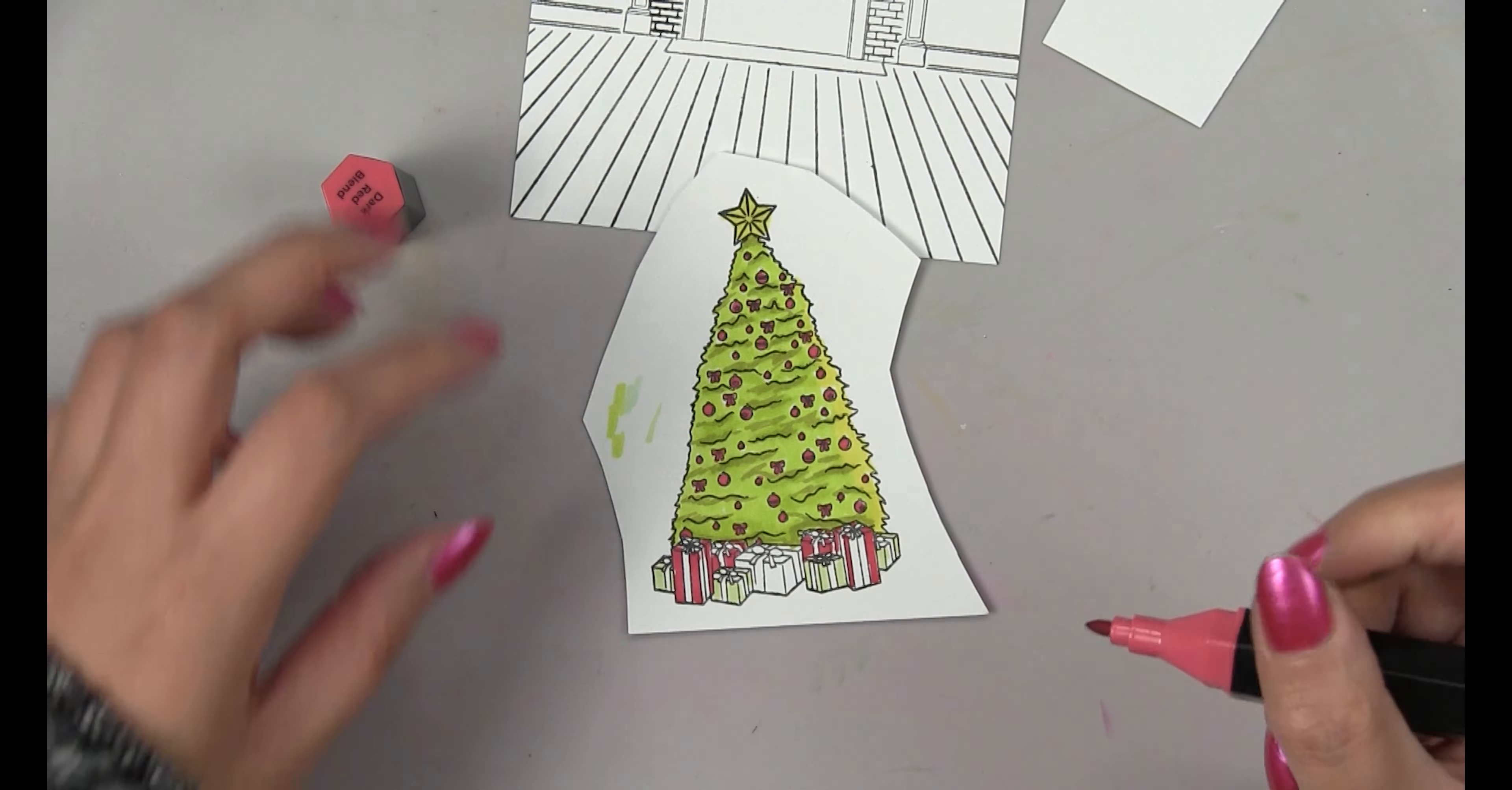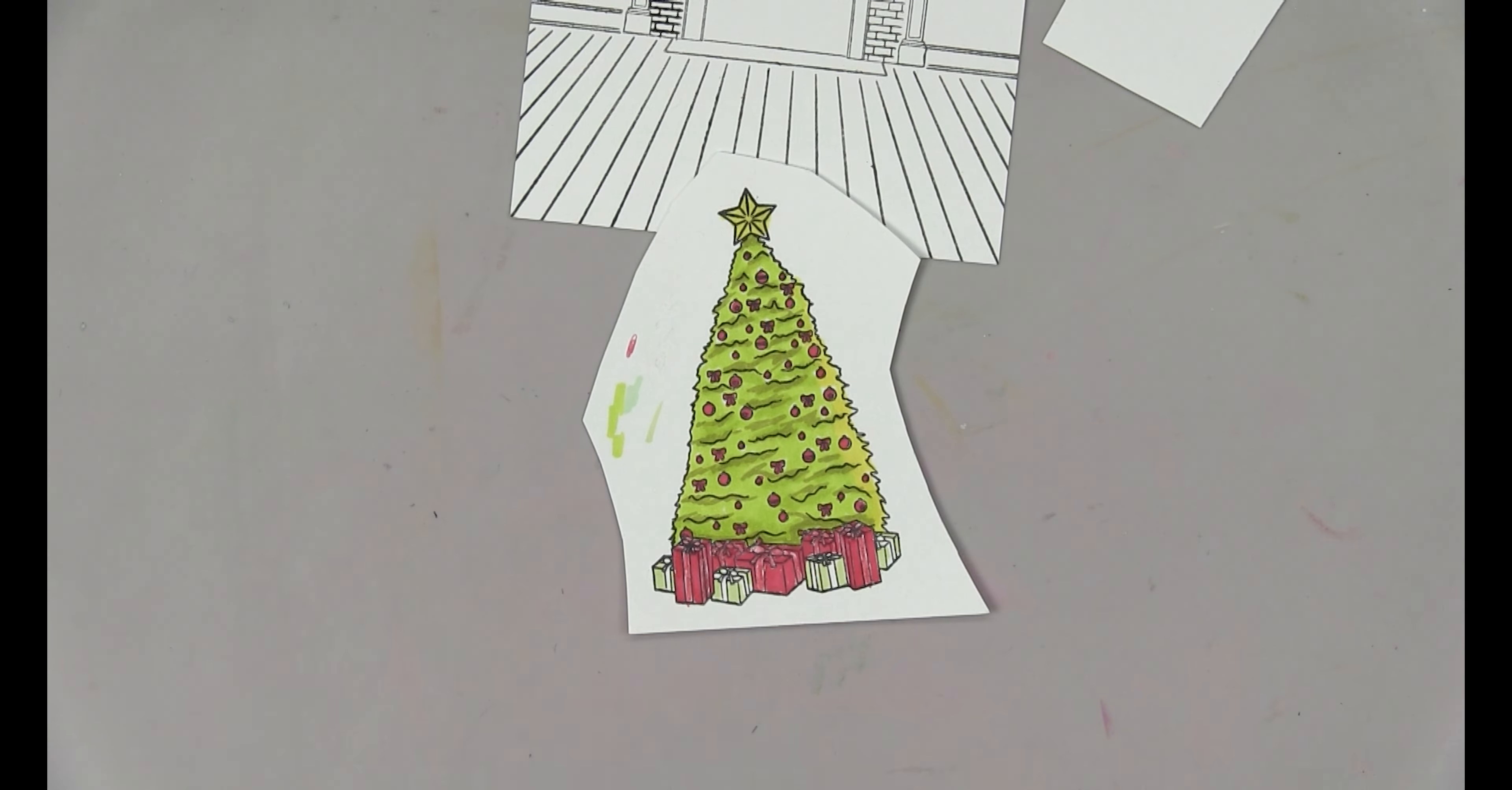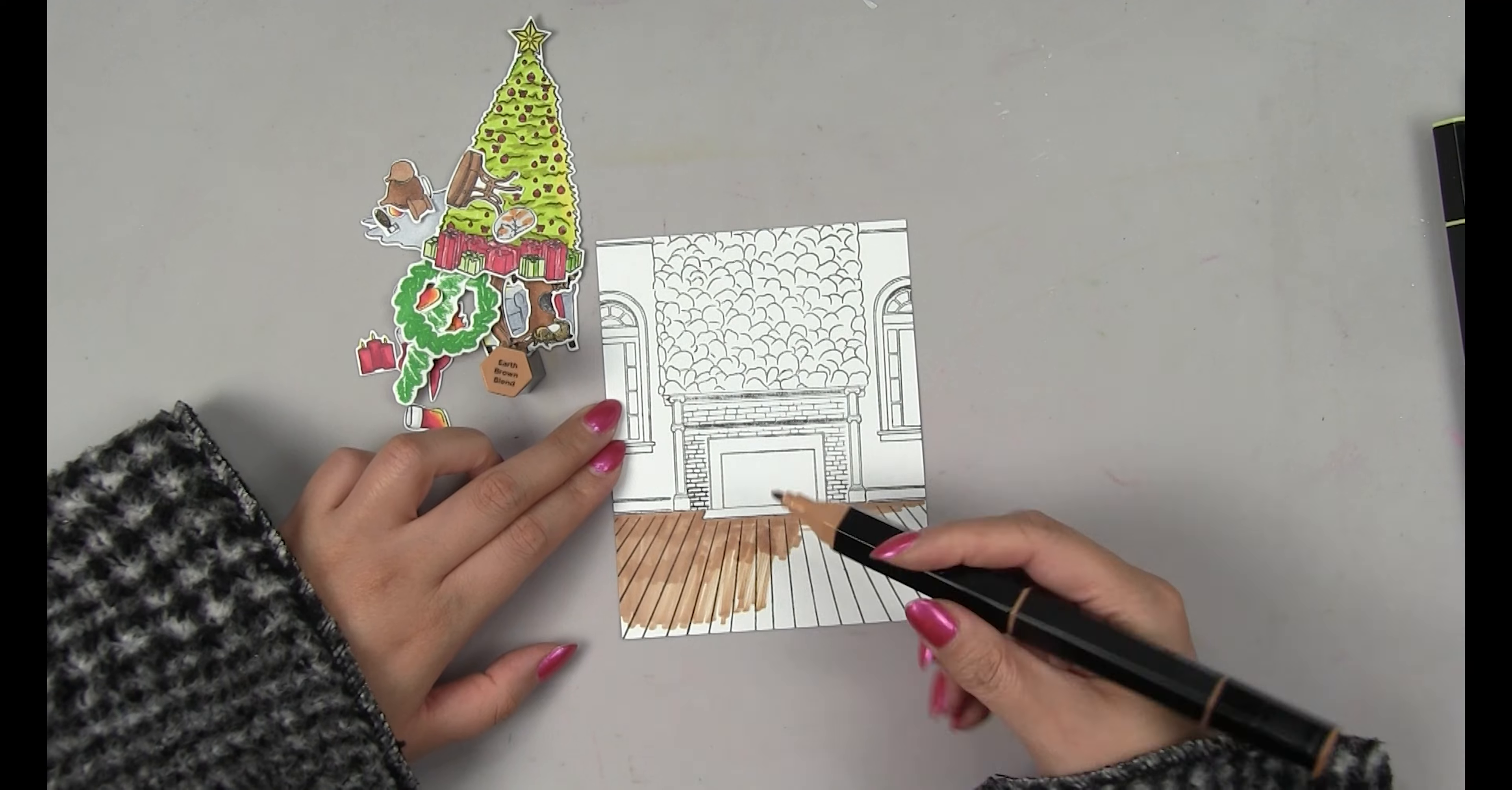And then I added red to the ornaments and bows and then I used a green and red marker for the presents and then I used a red and green glitter pen for the ribbon on the gift images. Then I die cut all of those images that we colored and now I'm going to color in the background.